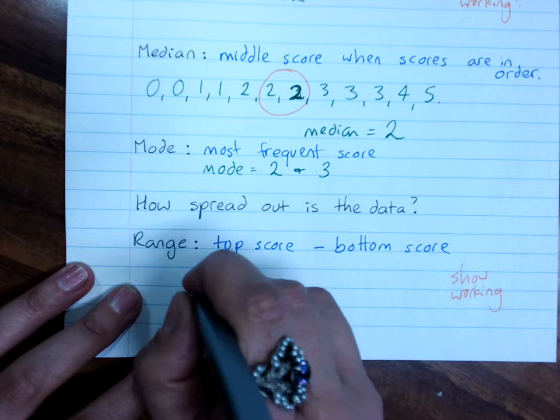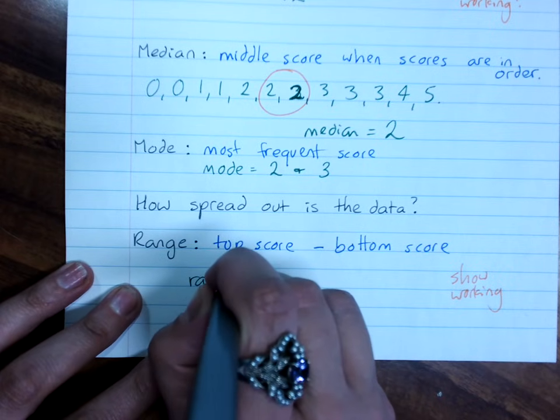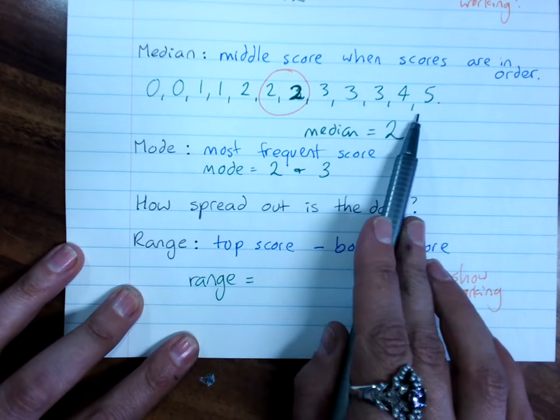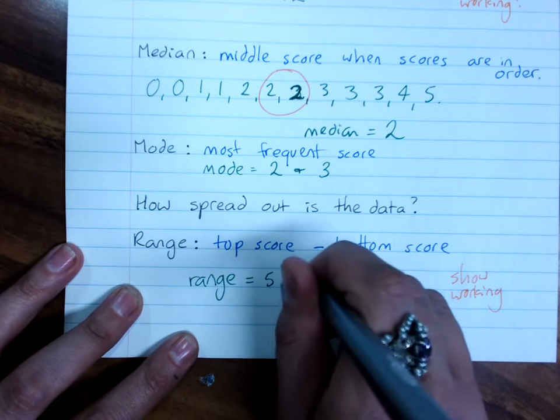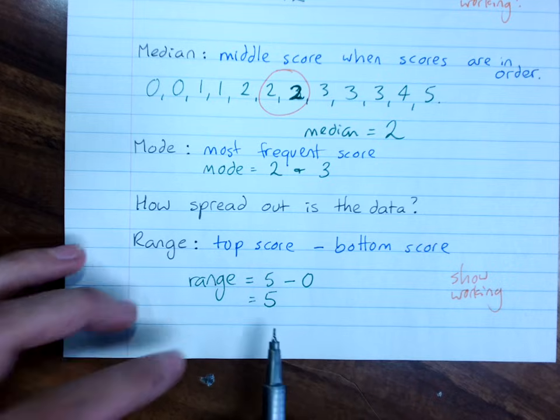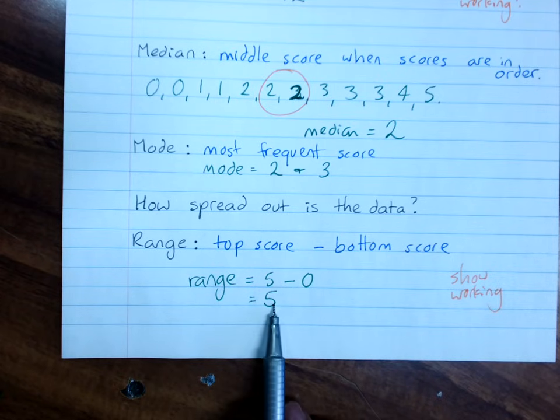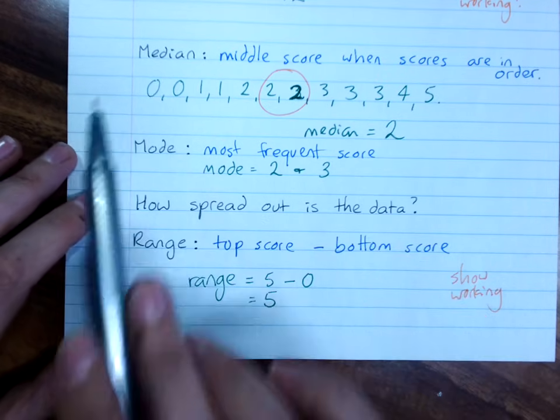And so that is range equals, top score was five, bottom score was zero, so my range is five. And that's just saying there were five medals between the top person and the bottom person.